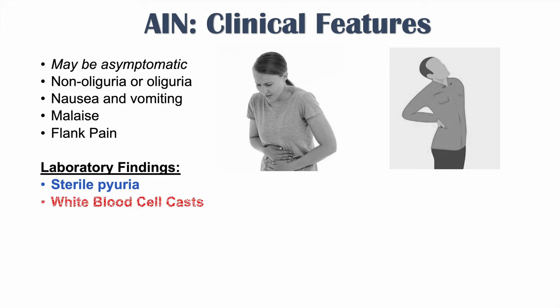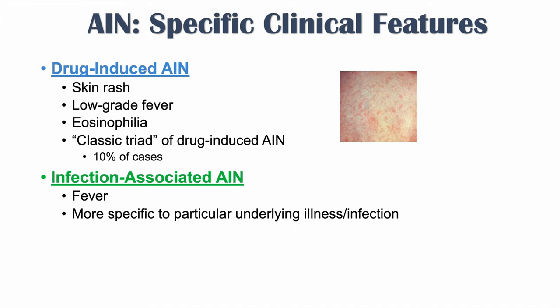In infection-associated AIN, fever from the infection itself may be present, and signs and symptoms tend to be specific to the underlying infection — for example, gastrointestinal symptoms with Salmonella or syphilis features with Treponema pallidum. In systemic illness-associated AIN, signs and symptoms reflect the underlying condition, such as dry eyes and dry mouth in Sjogren's syndrome.